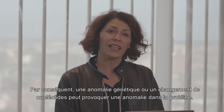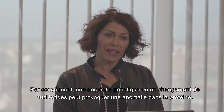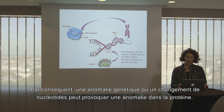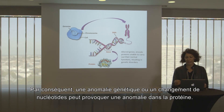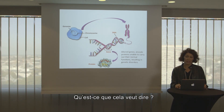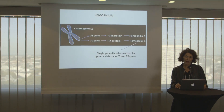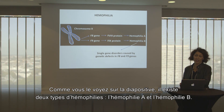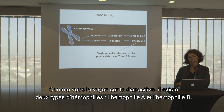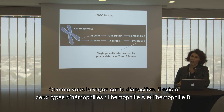If there is any genetic abnormality and change of the nucleotides, that will lead to an abnormal protein. Looking at the slides, you can see that we have two types of hemophilia: Hemophilia A and Hemophilia B.